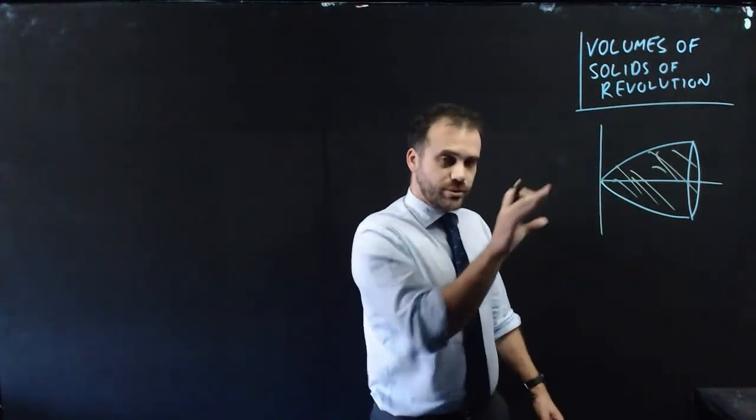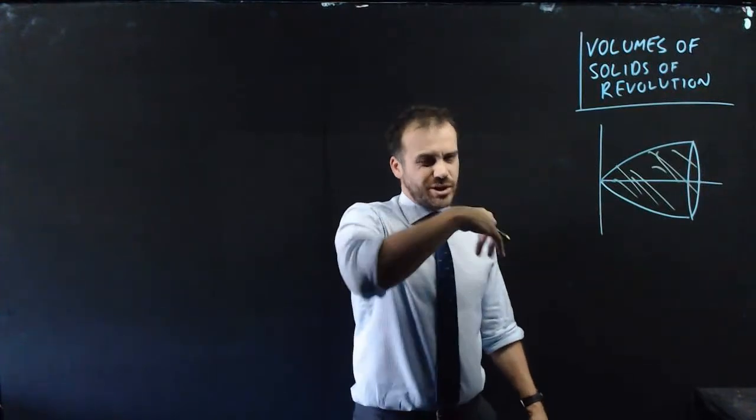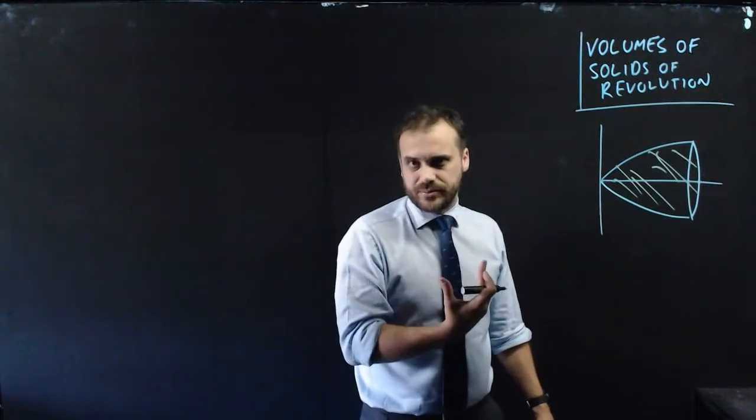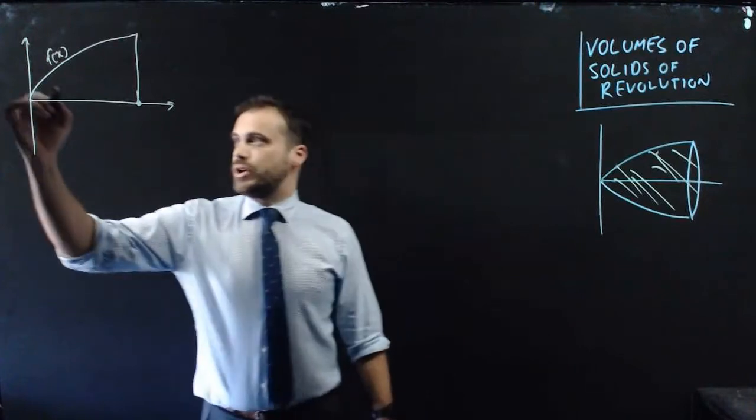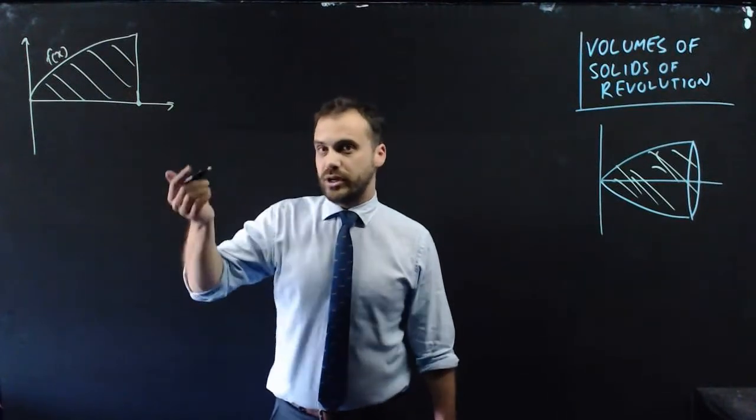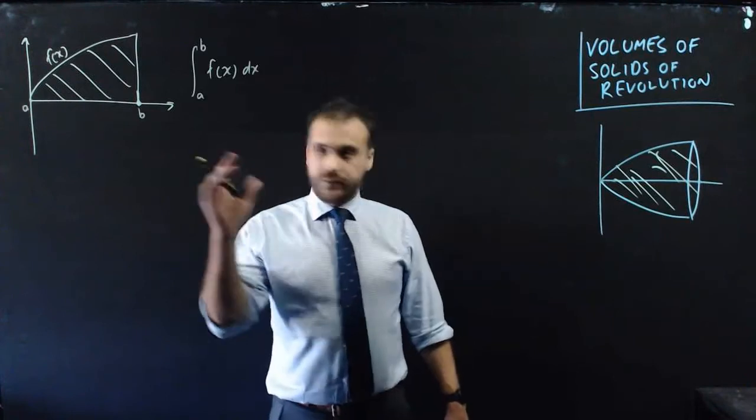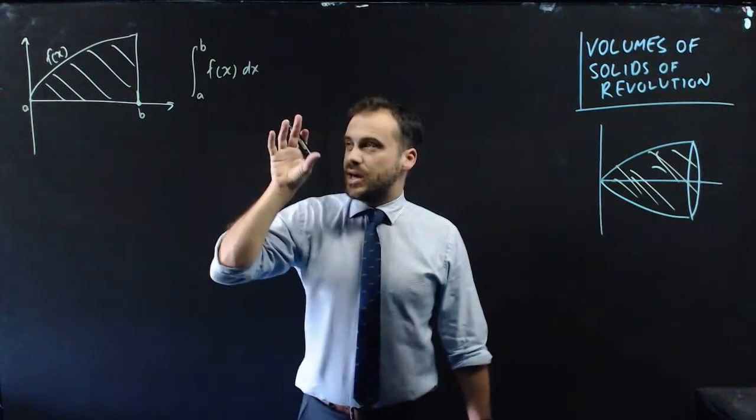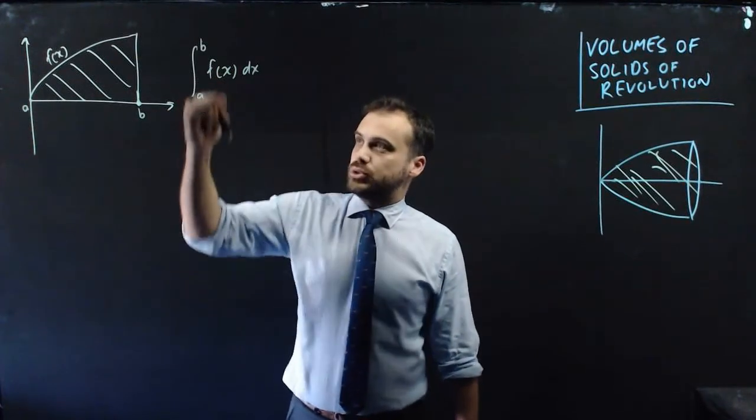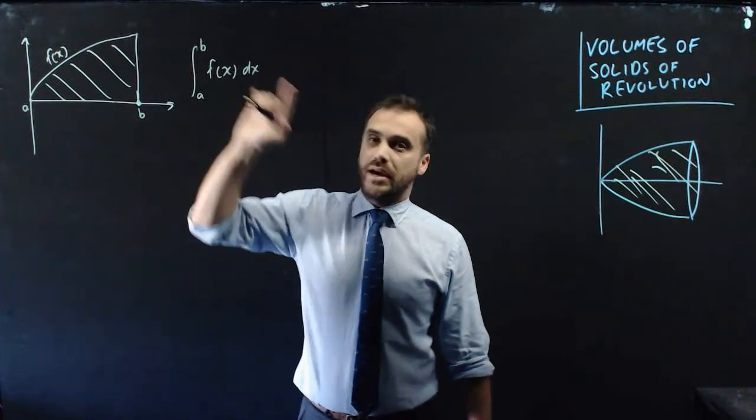Now before we get into the volume of solids of revolution, we need to go back to two dimensions just for a minute. In two dimensions, you already know how to find the area under a curve, right? You just use integration. If that's b and that's a, the area under the curve is going to be the integral between b and a of f of x.